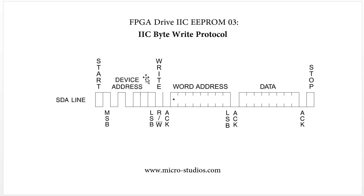After this device address and read/write bit, it will have one acknowledge bit here. The acknowledge bit is low level — active low level.